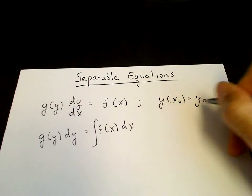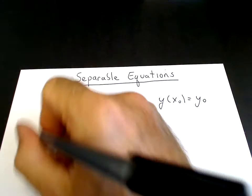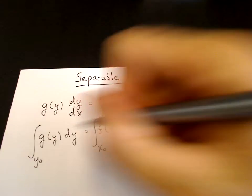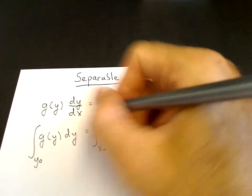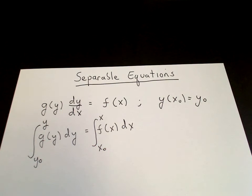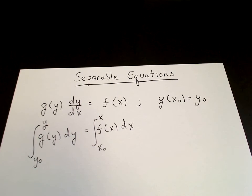So we integrate from the initial condition, x0 to x, and then we integrate from y of x0, which is y0, to the value of y at x is what we call y. So a separable equation then gets separated and then immediately integrated.